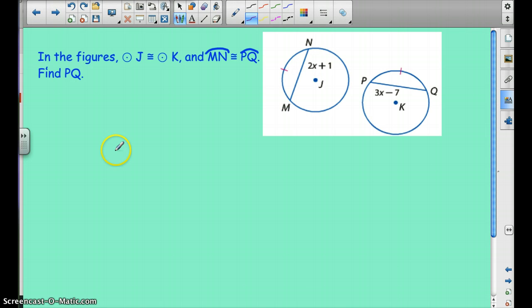As we move on, we're going to use some algebra here. So in circles J and circle K, the two arcs are congruent. And then we need to find what PQ is. Well, since the two arcs are congruent, we can say the two chords are congruent as well. So we can set 2X plus 1 equal to 3X minus 7.